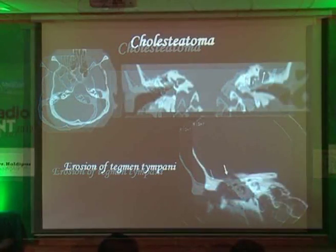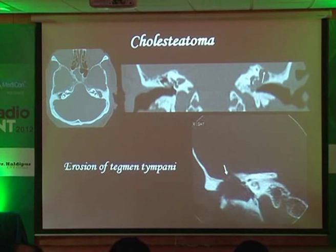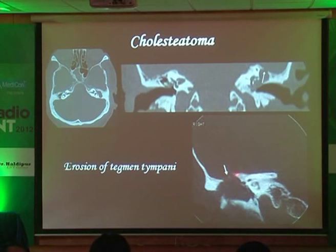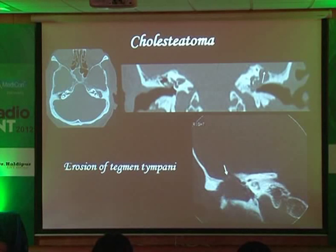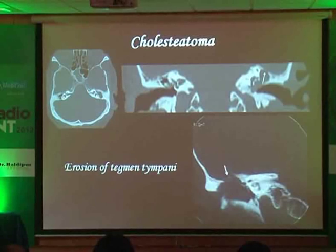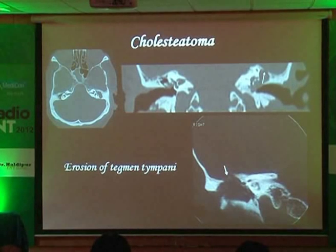Now moving on to tegmen erosion. This is the erosion of the tegmen by cholesteatoma. You can also have a large defect within the tegmen. This provides the axis for intracranial extension — there are two areas: one is the tegmen, and the second is the dural plate from where you can have intracranial extension.